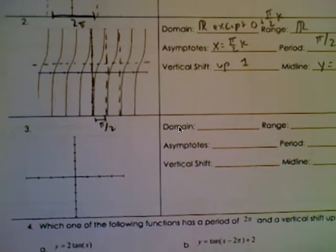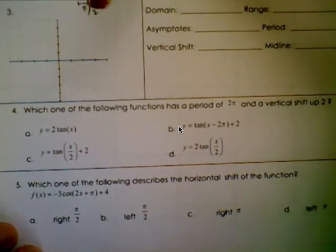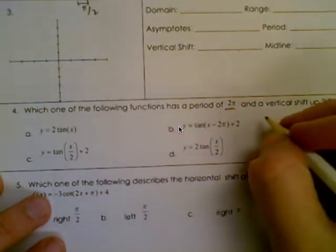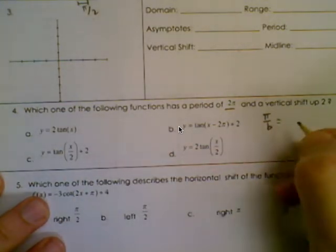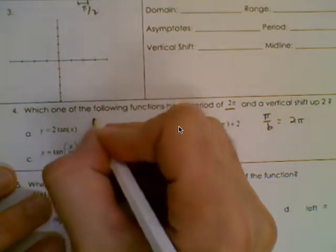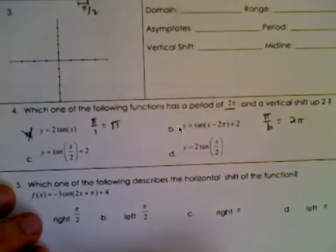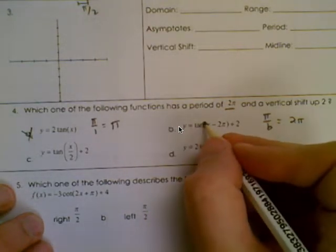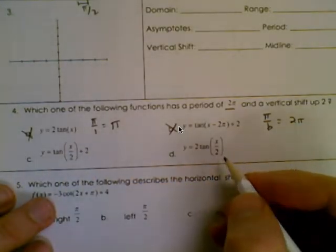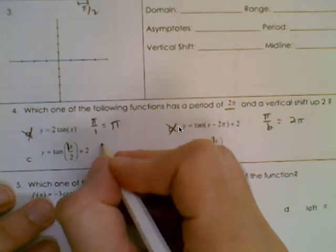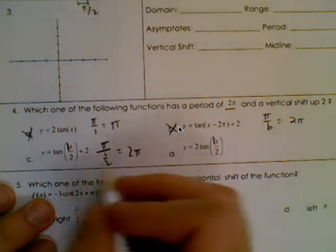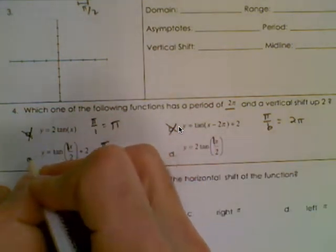For number 4: which of the following functions has a period of 2 pi and a vertical shift of up 2? If the period is 2 pi, then pi over b must equal 2 pi. For choices with b equal to 1, pi over 1 is pi, so those aren't right. It comes down to the two choices with x over 2, meaning b is one half. Pi over one half gives us 2 pi — the correct period. Both of those have the right period, but only one has a vertical shift of 2, so the answer is C.